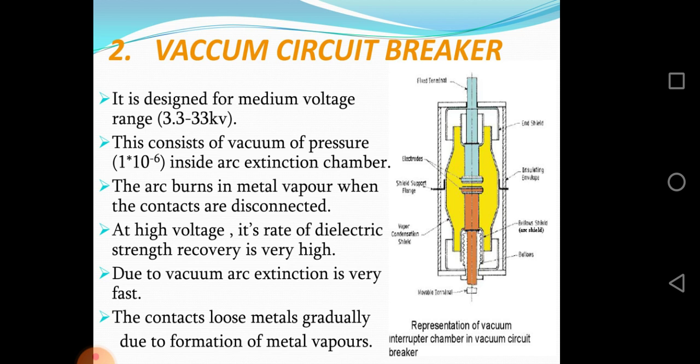Inside the arc extinction chamber, the arc burns in metal vapor when the contacts are disconnected at high voltage. Its rate of dielectric strength recovery is very high due to vacuum, so arc extinction is very fast. The contacts lose metal gradually due to formation of metal vapors. This diagram represents a vacuum interrupter chamber in a vacuum circuit breaker.